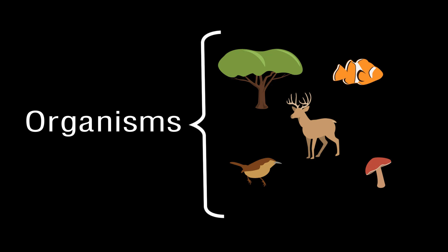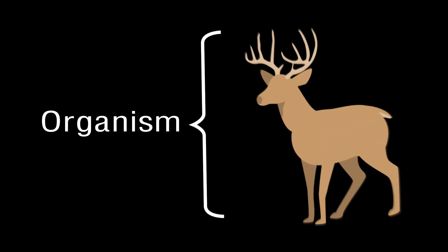Our next level of zooming moves to the category of organisms. Organisms are individual living things. Each white-tailed deer in our previous example is an individual organism.